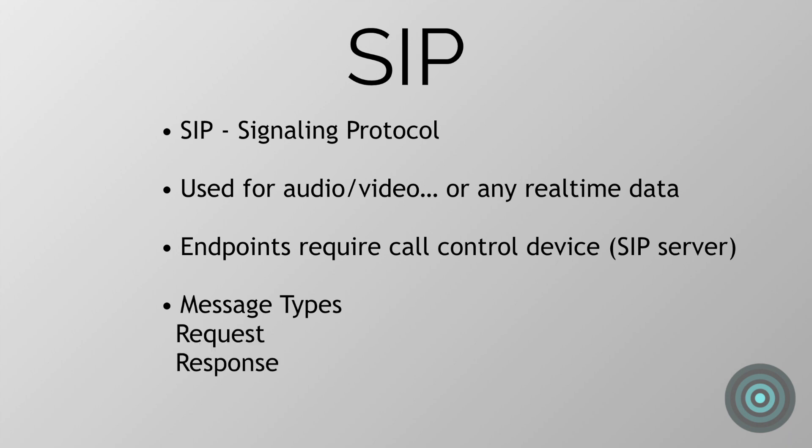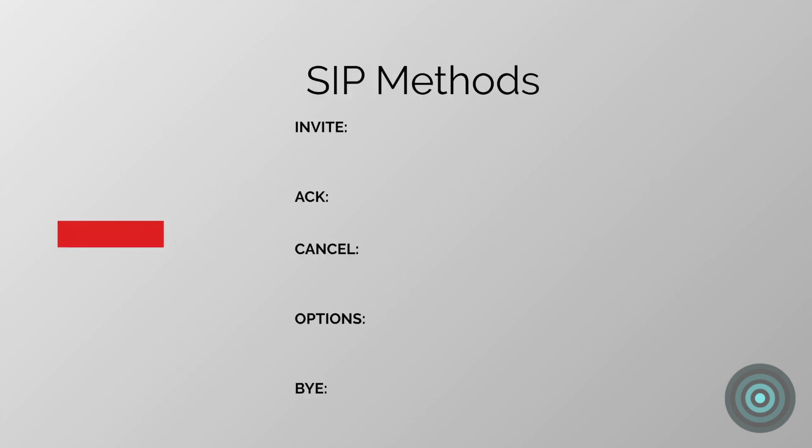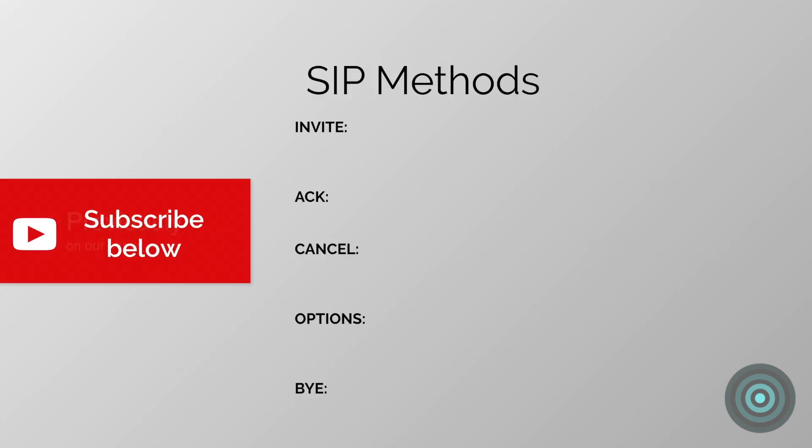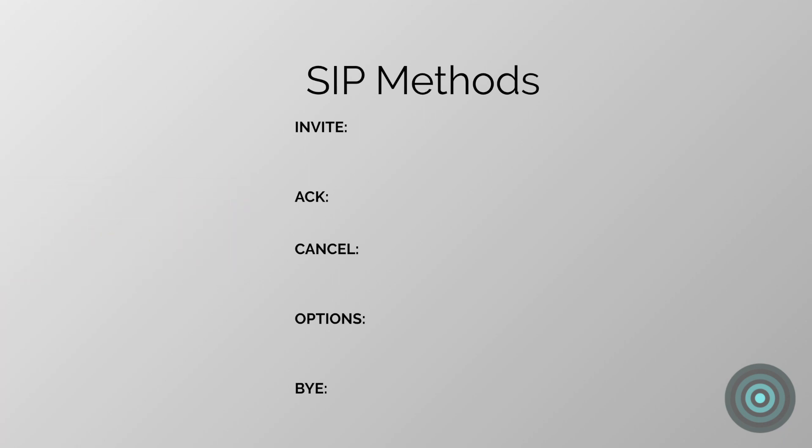To start out with, there are two SIP message types: request and response. A request is a message that's sent to a server and it invokes a method or function. There are actually several different SIP request methods, but we're only concerned with these five here today. These are the basic methods you should be familiar with, and we're going to see some of them later when we go back and take a closer look at that SIP log.